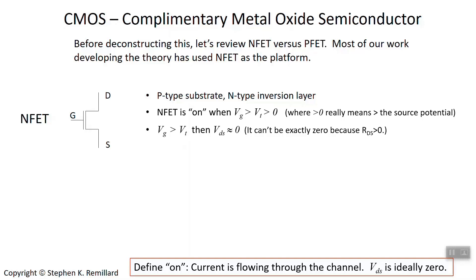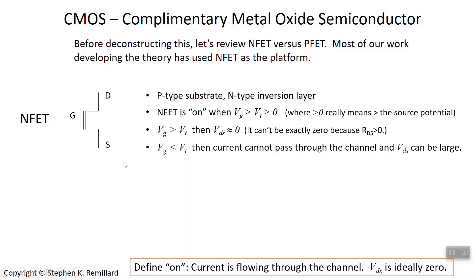When the NFET is on, the drain-source voltage wants to be very small because you're able to push a lot of current through the MOSFET. In digital electronics, the goal is not to push current through; the goal is just to set voltages but block currents. So the drain-source voltage will actually be very small when the gate is above threshold and the NFET is turned on.